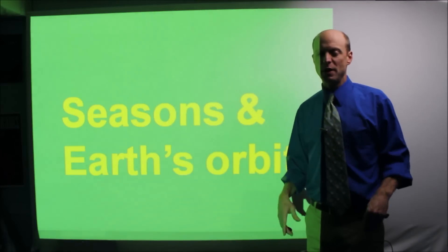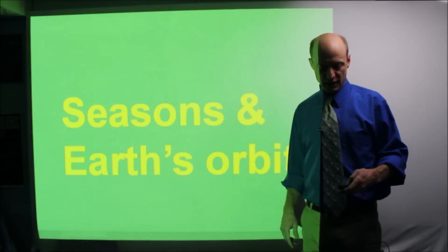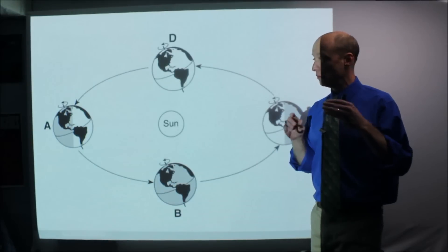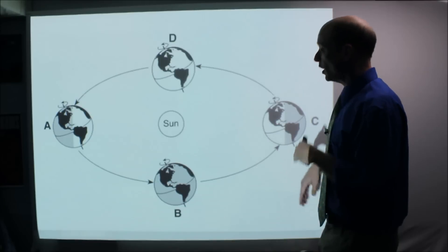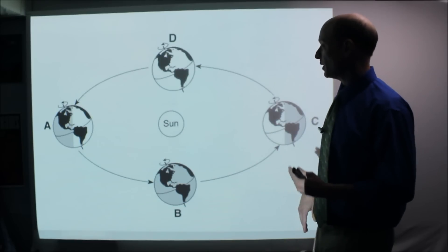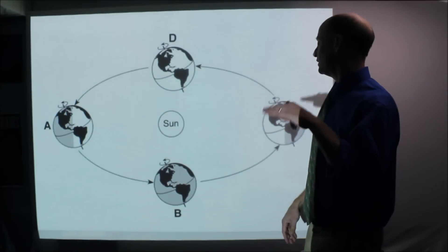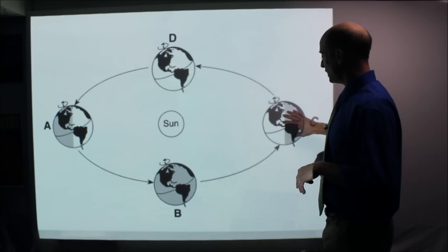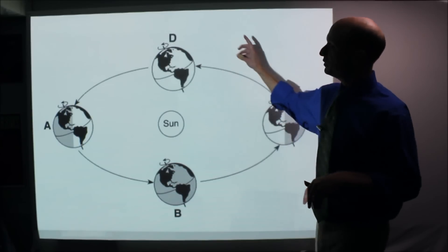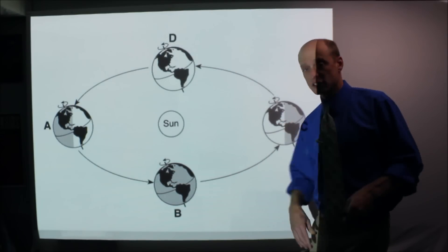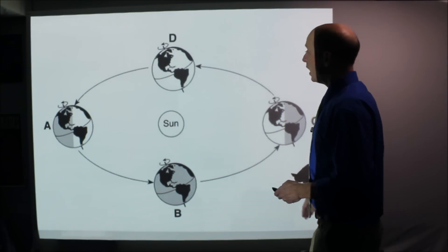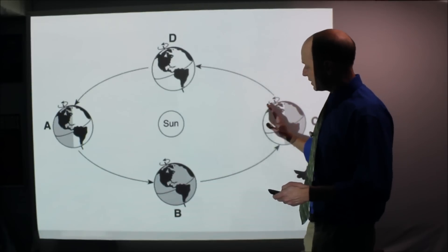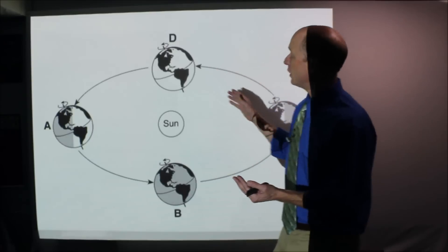Seasons and Earth's orbit — this is a big topic, there are questions on this every single test so make sure you're on top of it. This shows Earth's orbit around the sun, not to scale, but it basically goes from D to A to B back to C — that takes one year.